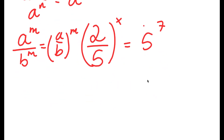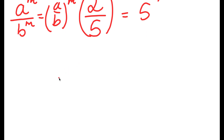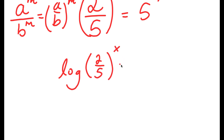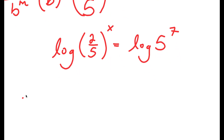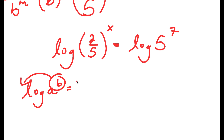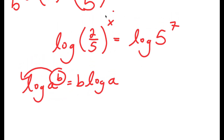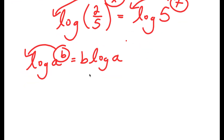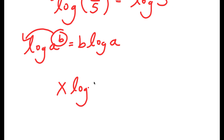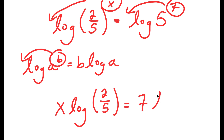Now from here, I'm going to take the log on both sides. So I get log of 2 over 5 to the power of x is equal to log of 5 to the power of 7. If I have something in the form log a to the power of b, I can move the exponent b to the front to get b times log a. So I can move x to the front on the left and 7 to the front on the right, giving me x times log(2/5) is equal to 7 times log 5.